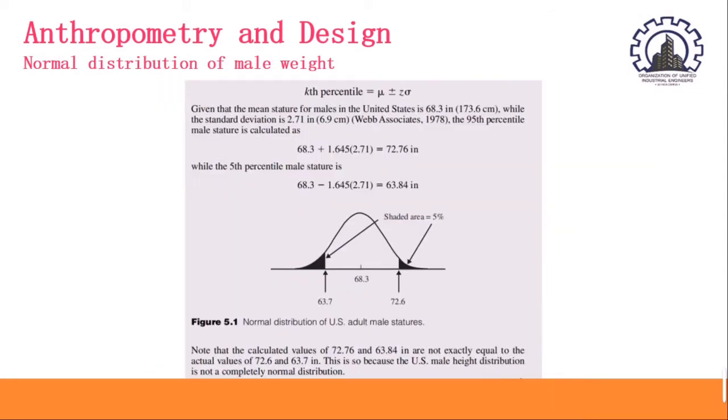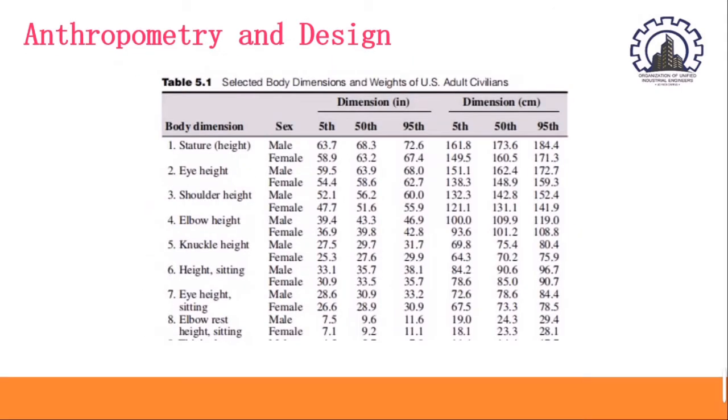While the 5th percentile male stature is 68.3 minus 1.645 times 2.71, which is the standard deviation given, and it is equal to 63.84, which is closely relative to our table in the stature height in the 5th percentile, which is 63.7.